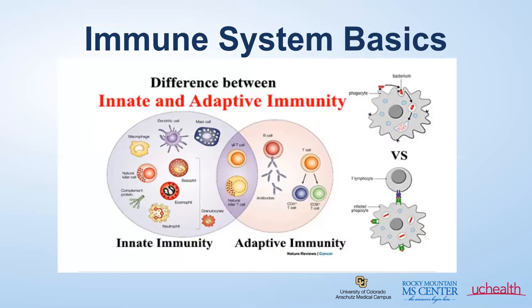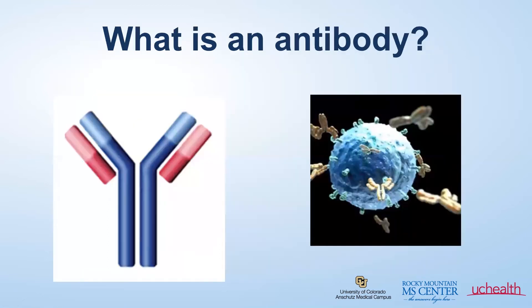I want to bring your attention now to the B cells, seen here in red. These cells create antibodies. An antibody is an immune globulin or protein that is produced by the immune system to help fight off infection. When the immune system misbehaves, antibodies are created that can attack yourself instead of a virus or an infection — hence, autoimmune disease.